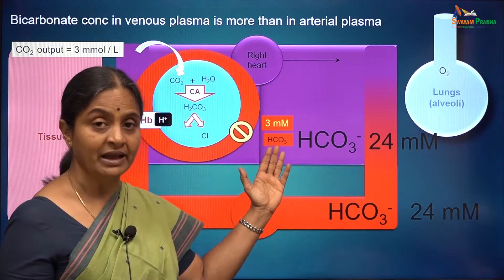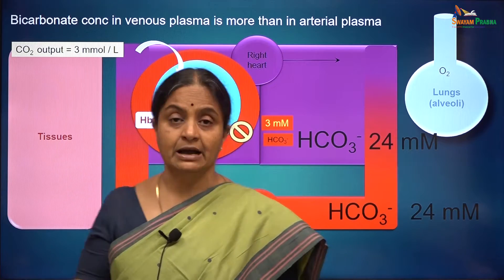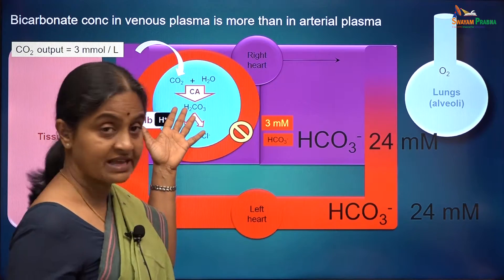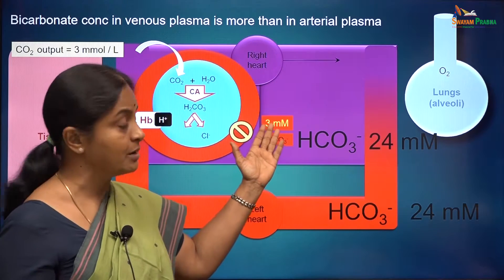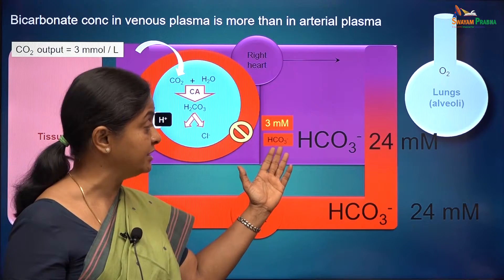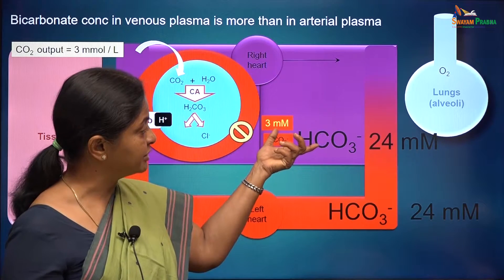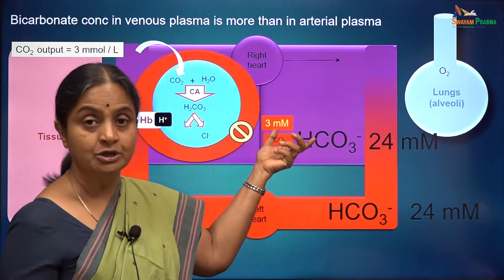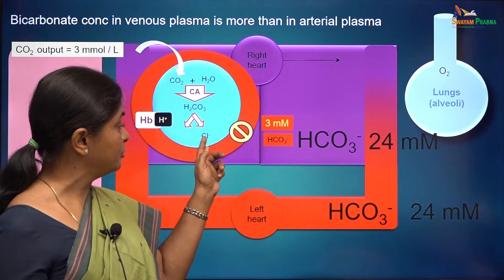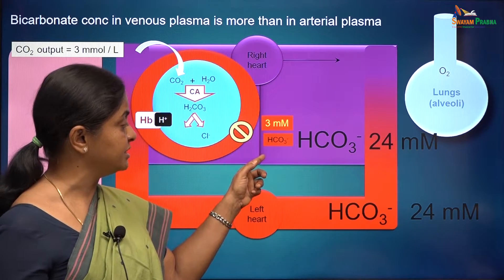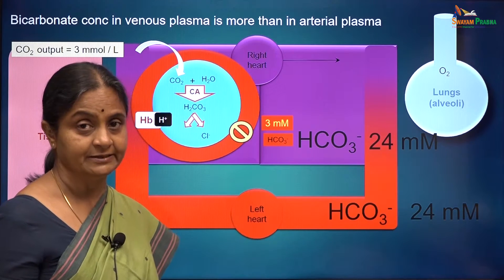How much more bicarbonate? If 3 millimoles per litre carbon dioxide came in and the reaction proceeds, about 3 millimoles per litre bicarbonate will be added to venous blood. So bicarbonate concentration goes up to 27 millimoles per litre and chloride concentration in venous blood drops by about 3 millimoles per litre.